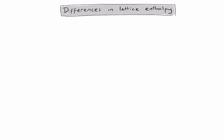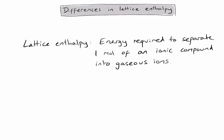This video is going to explain why different ionic compounds have different lattice enthalpy values. First, let's remind ourselves what we mean by lattice enthalpy. It's the energy required to separate one mole of an ionic compound into its gaseous ions. The key bits in this definition are one mole of the ionic compound and gaseous ions.